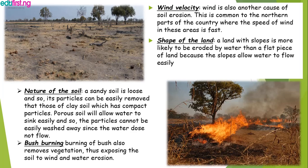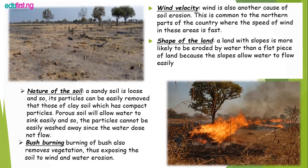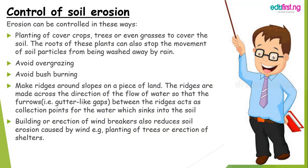The shape of the land also causes soil erosion — when the land is slopey, it easily causes soil erosion. Control measures to avoid soil erosion include planting of cover crops, avoiding overgrazing, avoiding bush burning, making ridges around slopes of a piece of land, and building or erecting windbreakers to control the wind and reduce soil erosion.